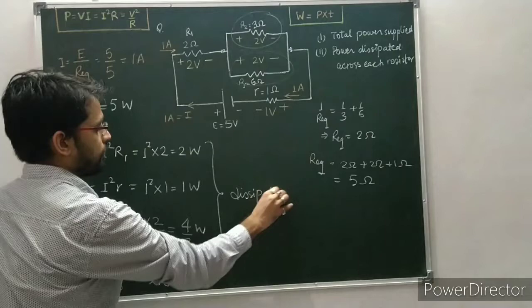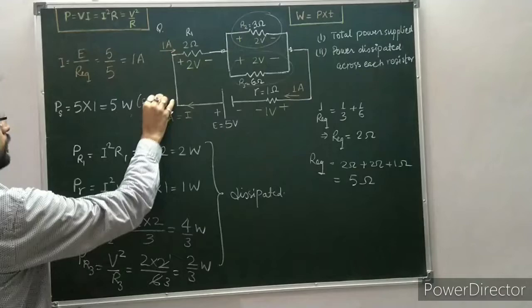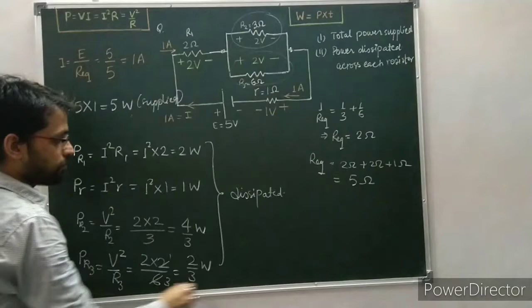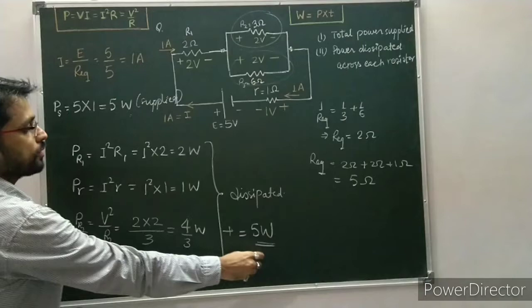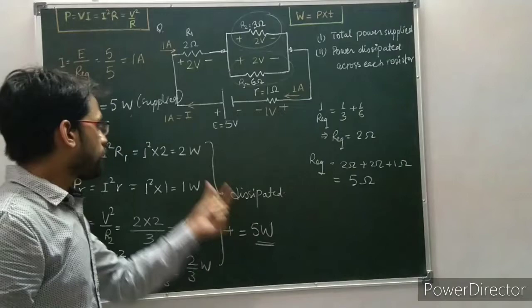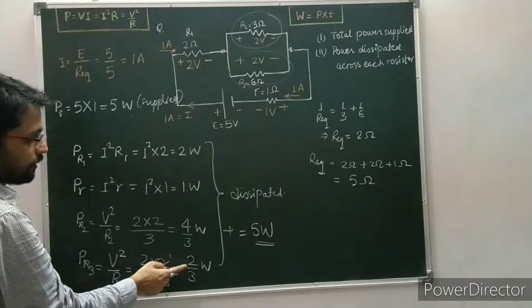This is the power supplied. When you add all the dissipated powers — 2W (R1) + 1W (internal resistance) + 4/3W (R2) + 2/3W (R3) — the sum comes out to be 5 watt, which equals the supplied power. This confirms energy conservation: the total power dissipated equals the power supplied.